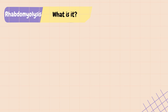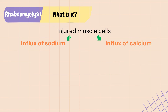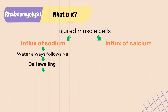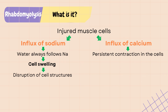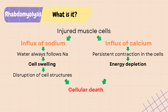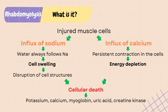Regardless of the cause, when a muscle cell membrane is injured, there is an influx of sodium and calcium into the cell. Since water always follows sodium, this causes swelling inside the cells, resulting in disruption of cell structures. The influx of calcium causes persistent contraction and leads to energy depletion, and eventually the injured cells are unable to compensate.